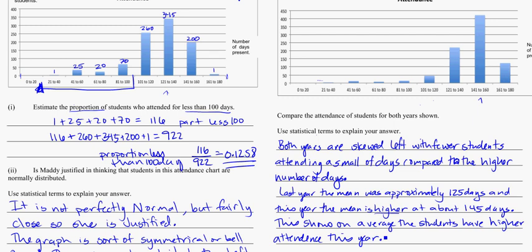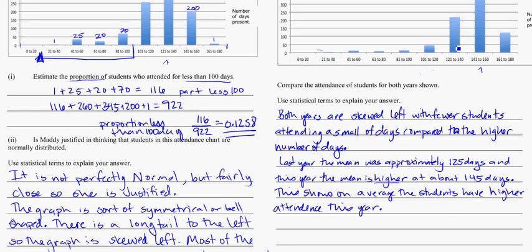Another way to look at this is that last year the graph, the students, the attendance seems more spread out than this year. This year it's quite clumped up and closer together, so I might also say that.